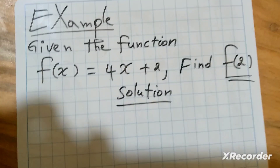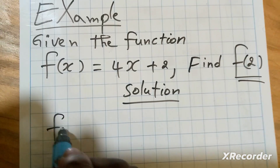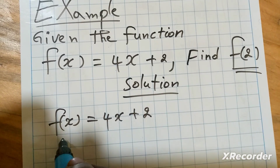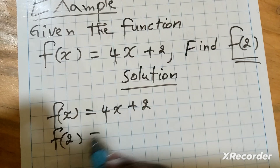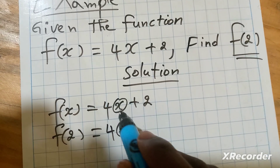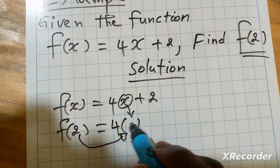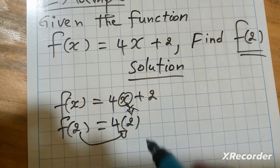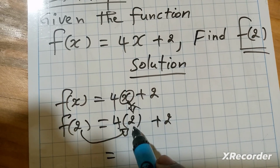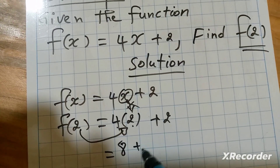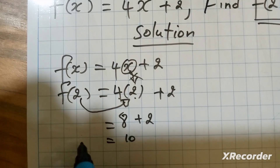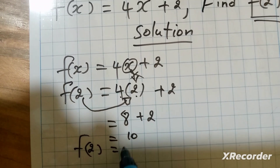As a solution, if we have f of x which is equal to 4x plus 2, and we have f of 2, so we have 4 — then instead of writing this x, we put this 2. That's why this will be 4 times 2, which is 8, plus 2. This one is equal to 10. It means that f of 2 is equal to 10.